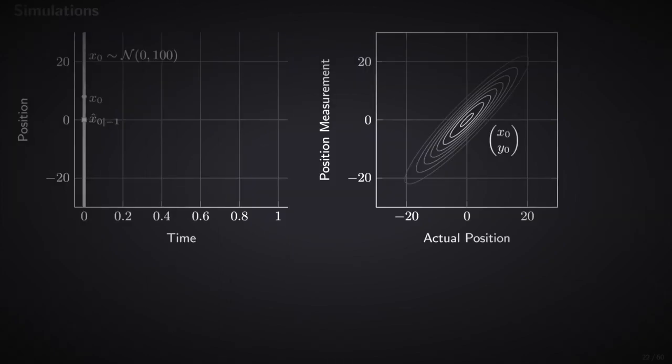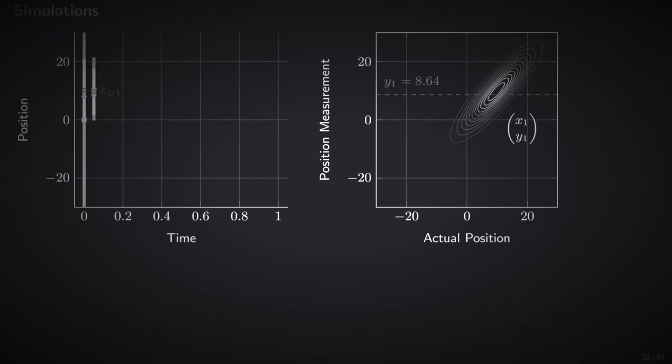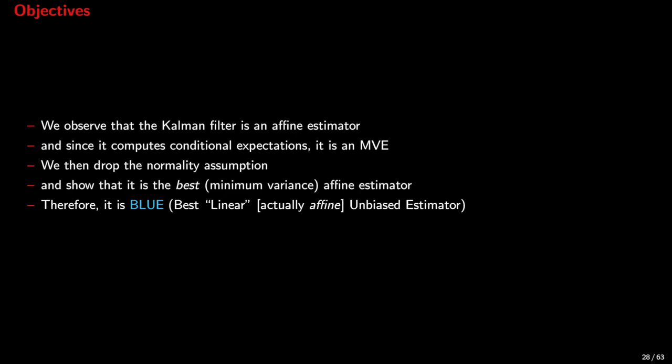We also saw in the previous video that the Kalman filter can be used for position estimation from noisy GPS measurements. In this video lecture, we will start by observing that the Kalman filter is affine — this means it has the form of a linear function plus a constant. And since it computes conditional expectations, it is a minimum variance estimator. We shall then drop the normality assumption and show that it is the best affine estimator. We say that the Kalman filter is BLUE — that is, the best linear unbiased estimator.